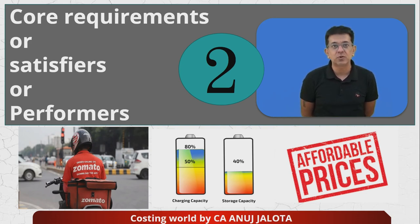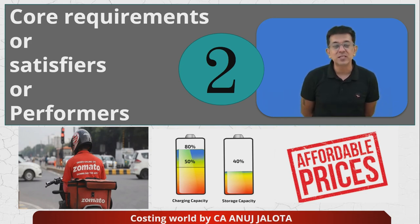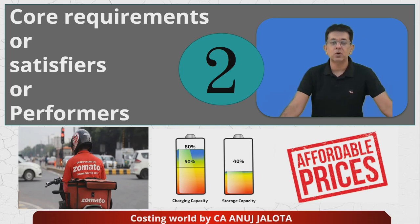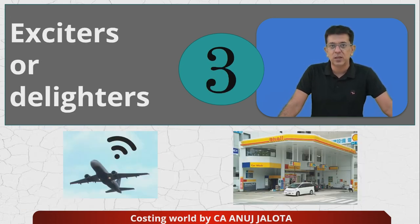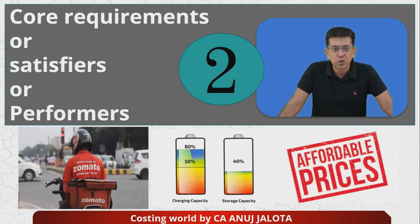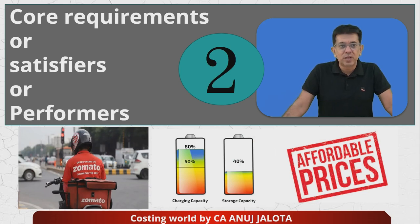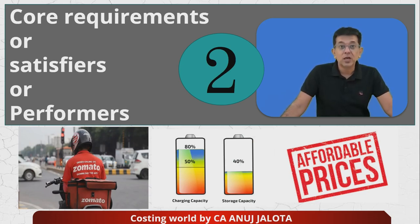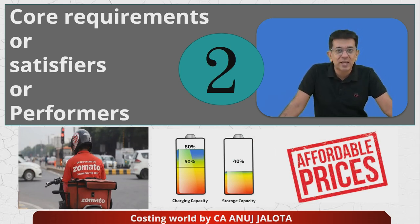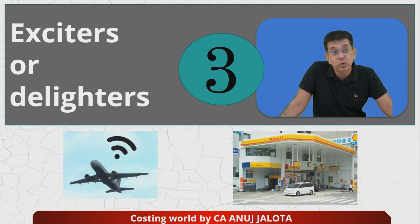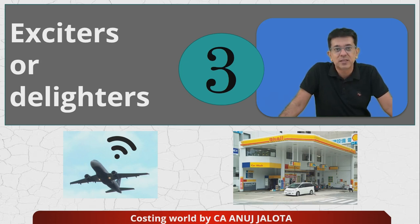The second part is core requirements or satisfiers. These are the things that should be in your product — the reasons for which the consumer pays you. If these things are not there, the customer is not going to buy your product or use your services. Examples: on-time delivery from Zomato, good battery life in a phone, affordable prices.